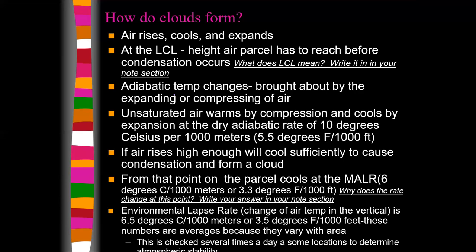Think of these as parcels — like balloons of air moving up and down in the air already over an area. There's something called an environmental lapse rate, which is just the change of air temperature in the vertical. We have weather balloons that go up twice a day to check temperature, humidity, pressure, and wind speed. They carry a radiosonde — a little instrument package — that measures all this and sends information back down to meteorologists so they know what's happening in the air already over us.